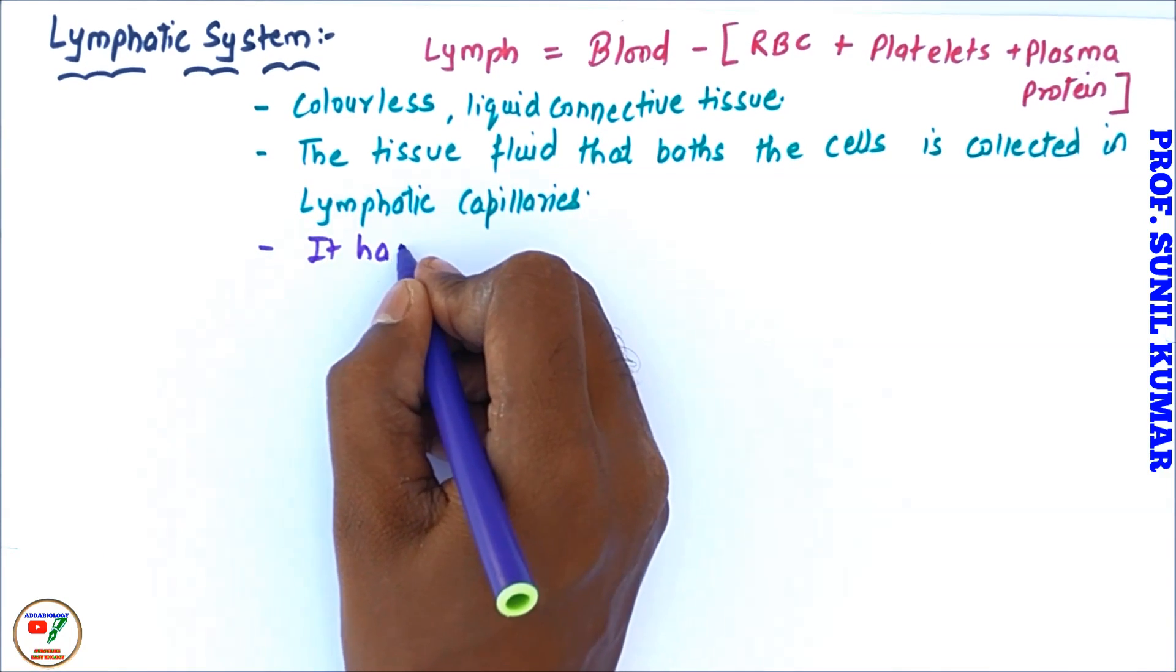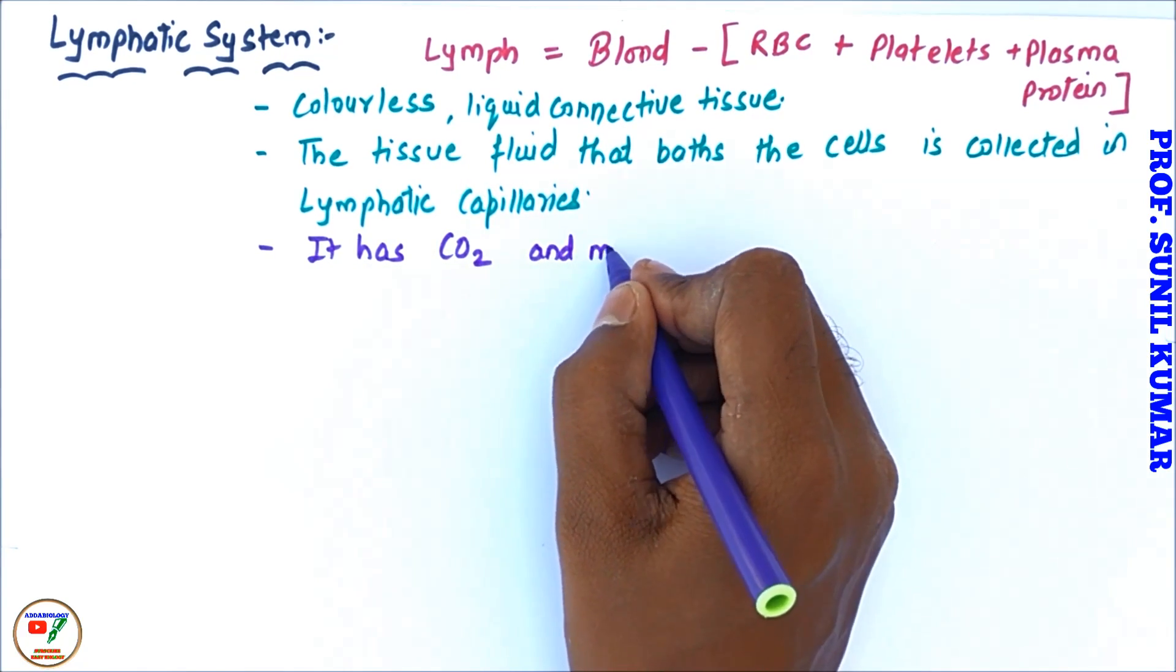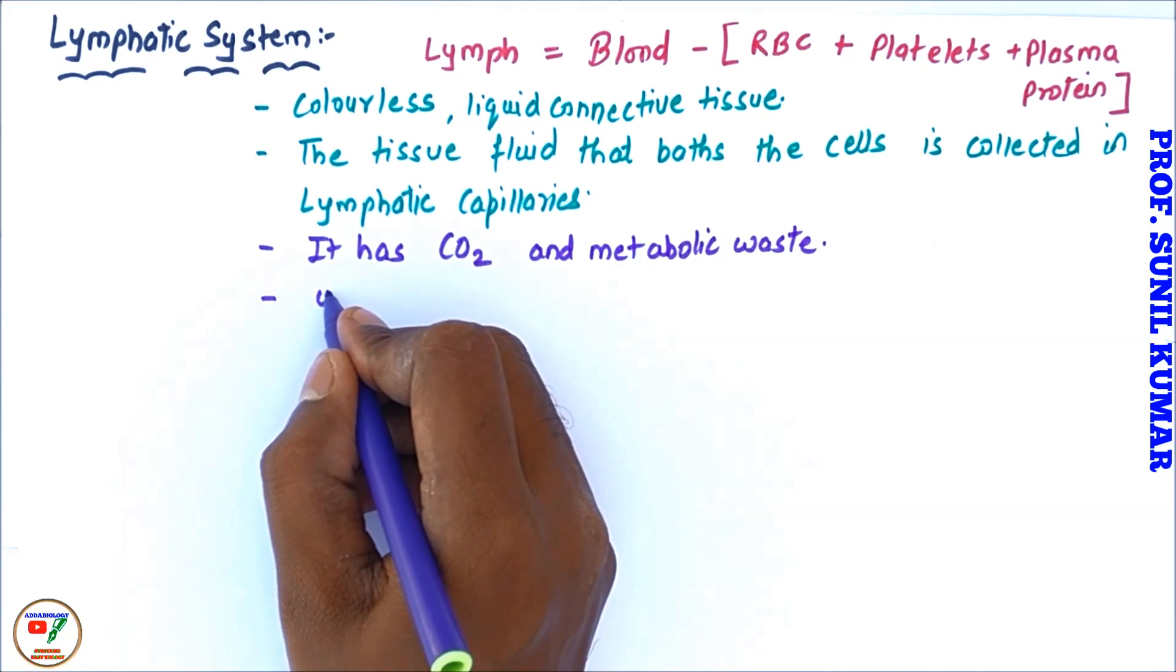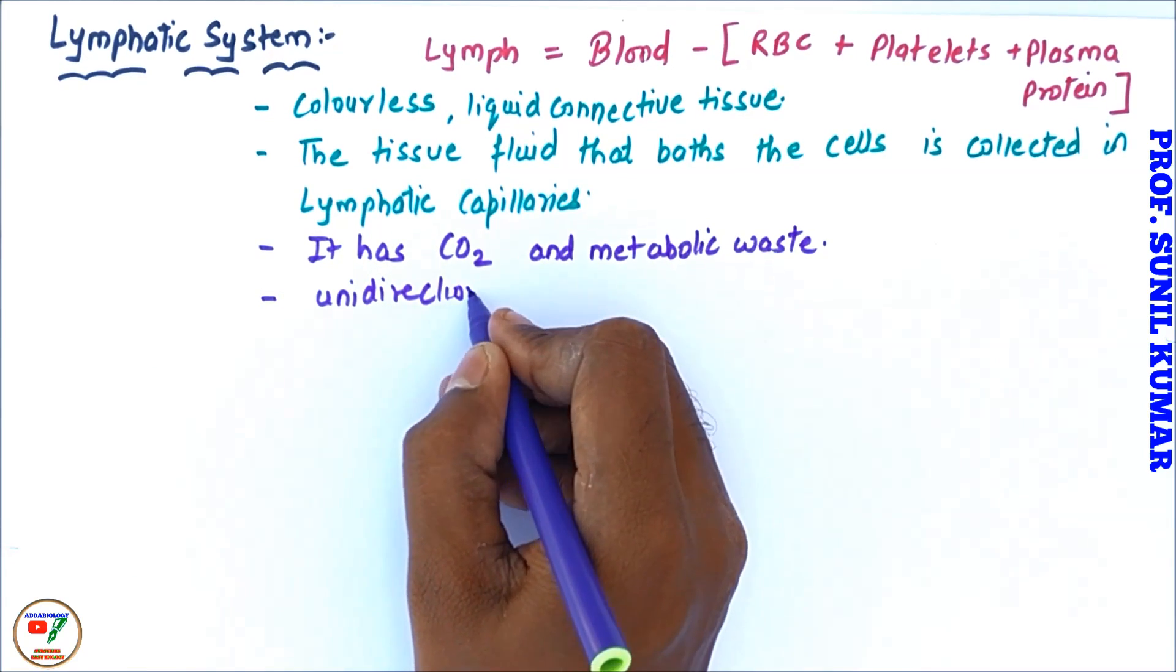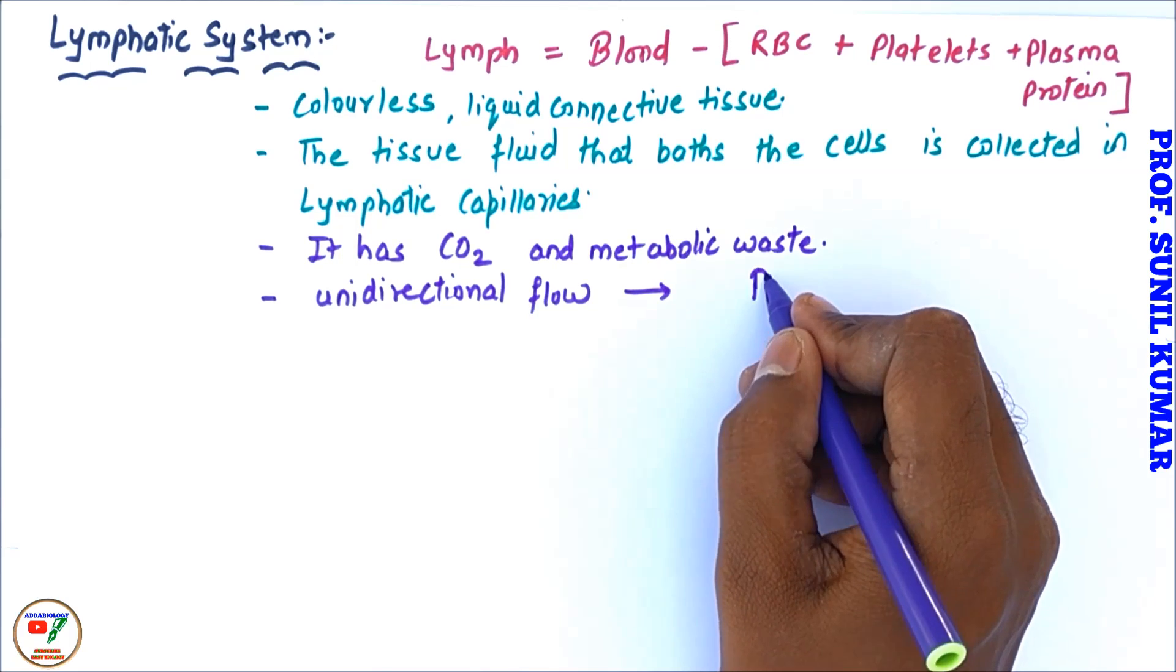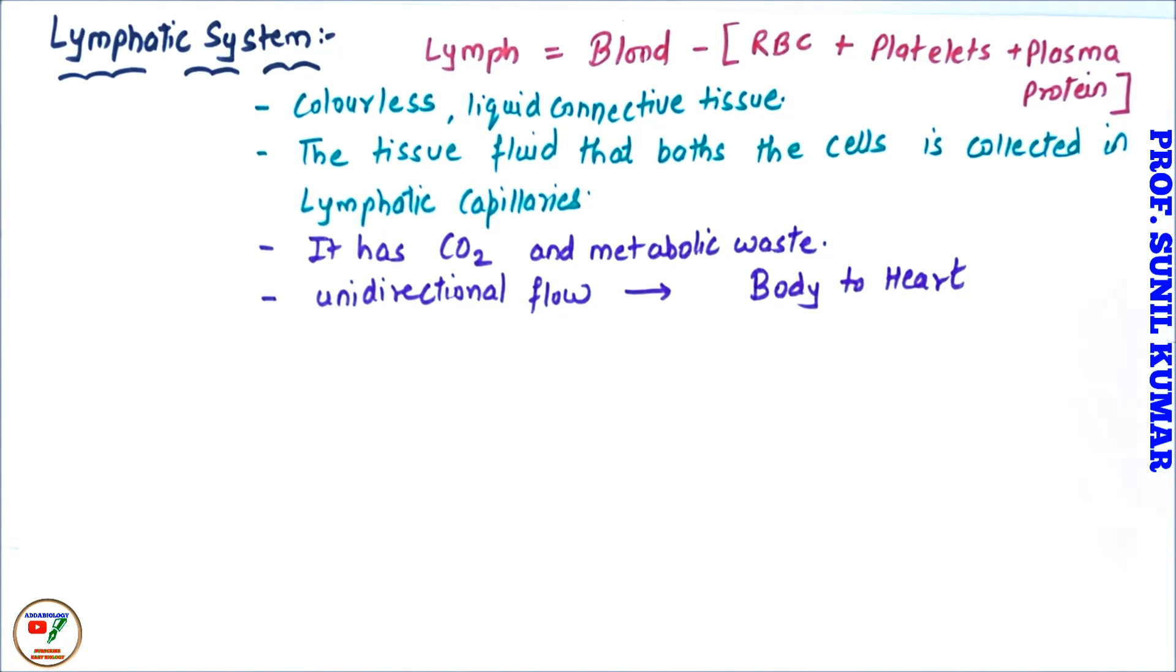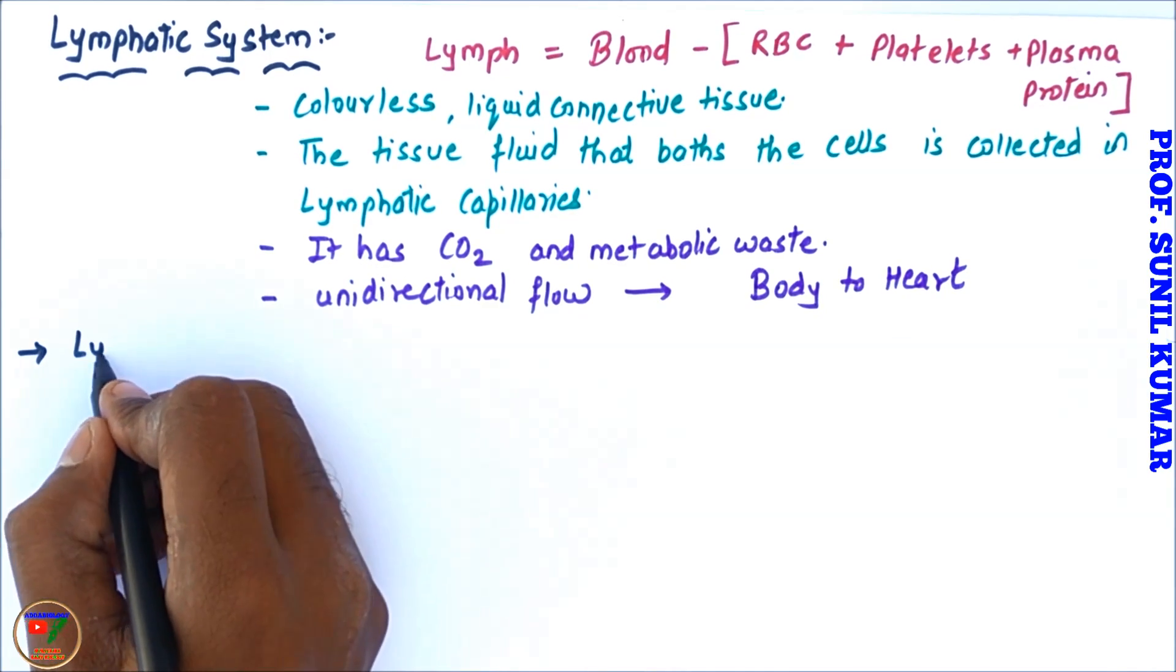So the most important purpose of the lymph is to provide nourishment, to provide all kinds of materials where blood cannot reach. So we can say that it helps in the transportation of carbon dioxide and the metabolic waste. When you talk about the flow of lymphatic system, we need to understand that they have unidirectional flow.